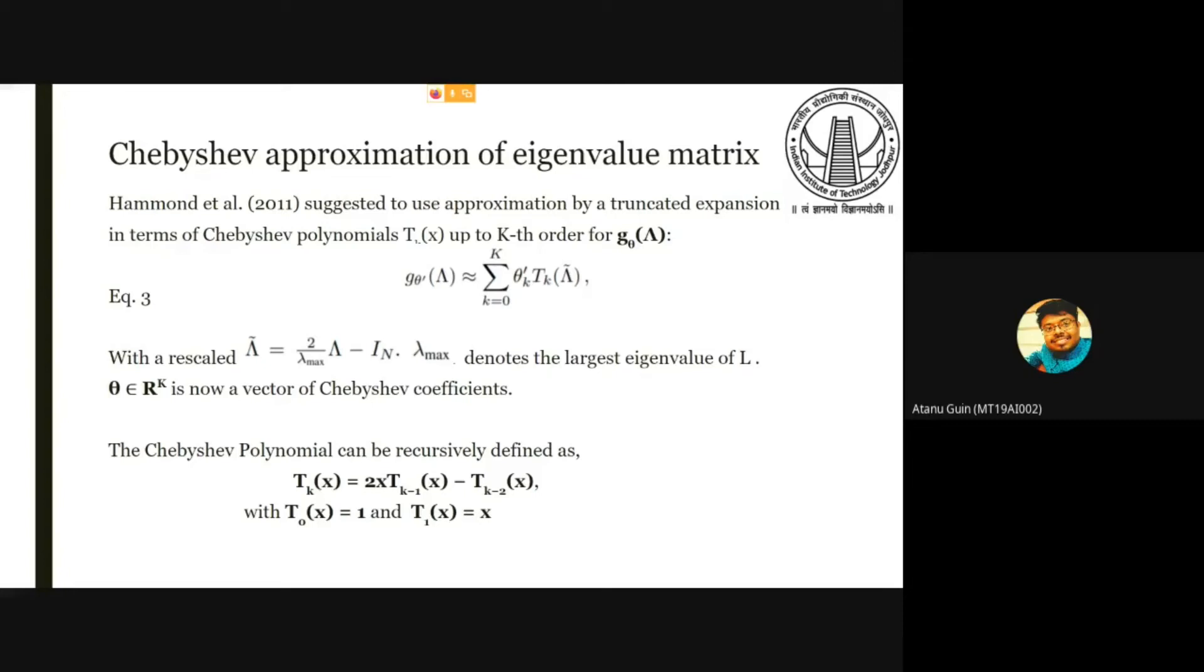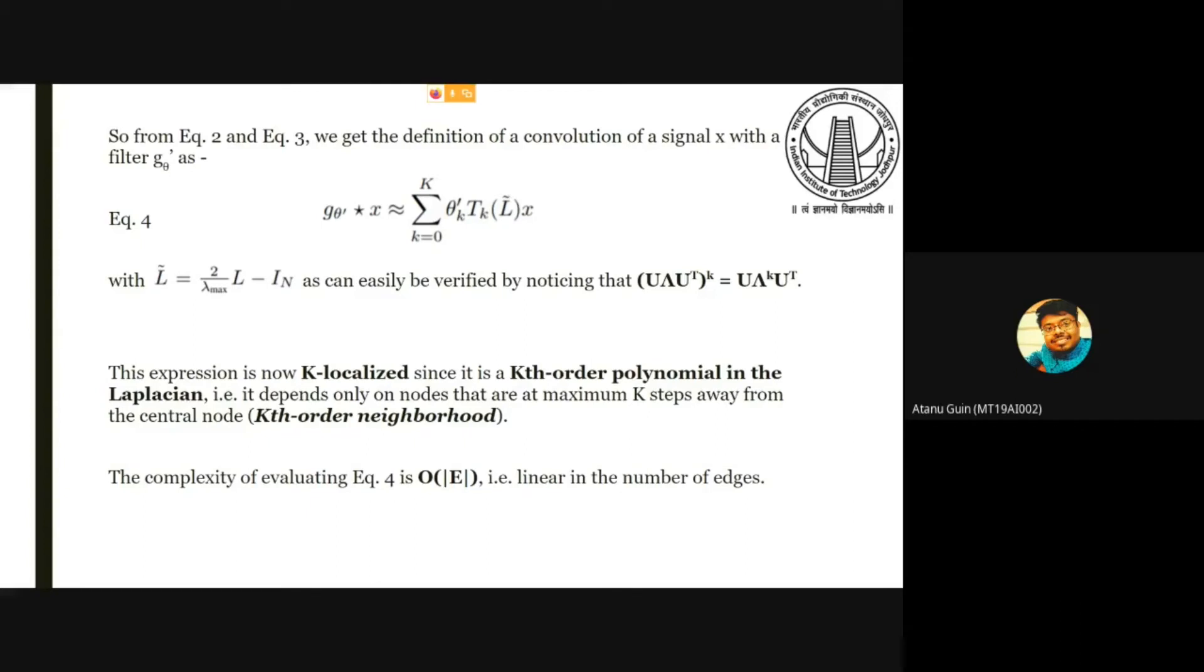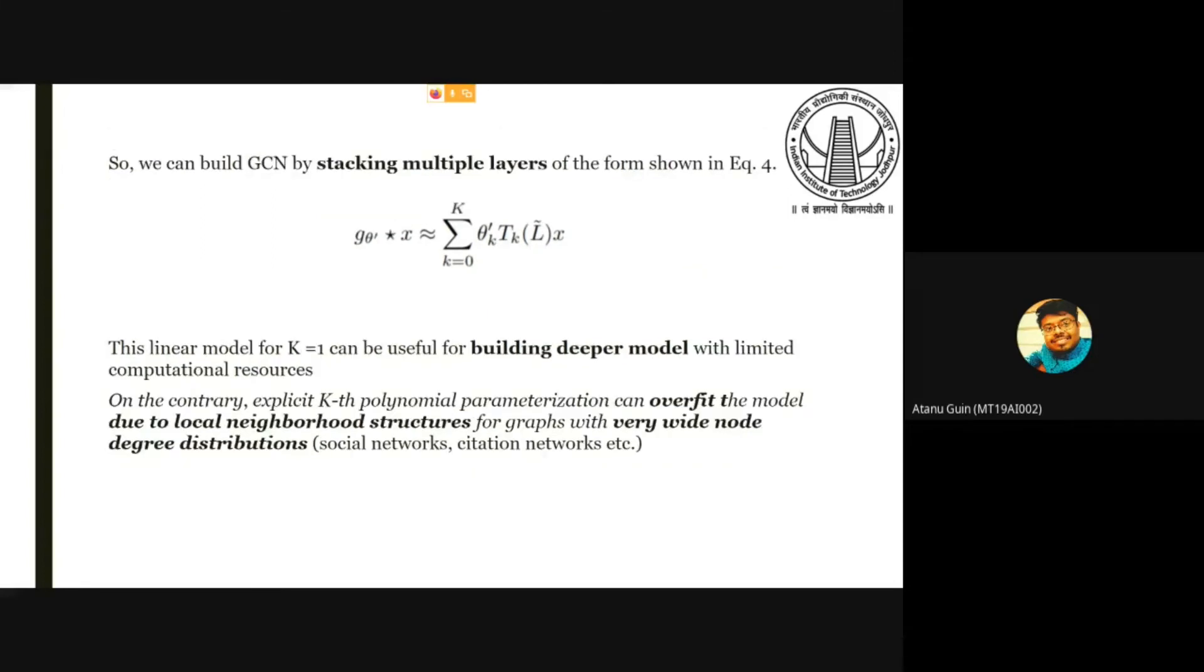The Chebyshev approximation parameter is represented by theta and the polynomial can be expressed recursively. But this kind of localized kth order polynomial can only aggregate for k steps away from a central node. This will be a simpler solution for our task and the complexity would be linear order of edges. By stacking multiple layers of the same linear filters, we can build a deeper model. But this kind of linear model can overfit for large sparse graphs which may have very wide node degree distribution.